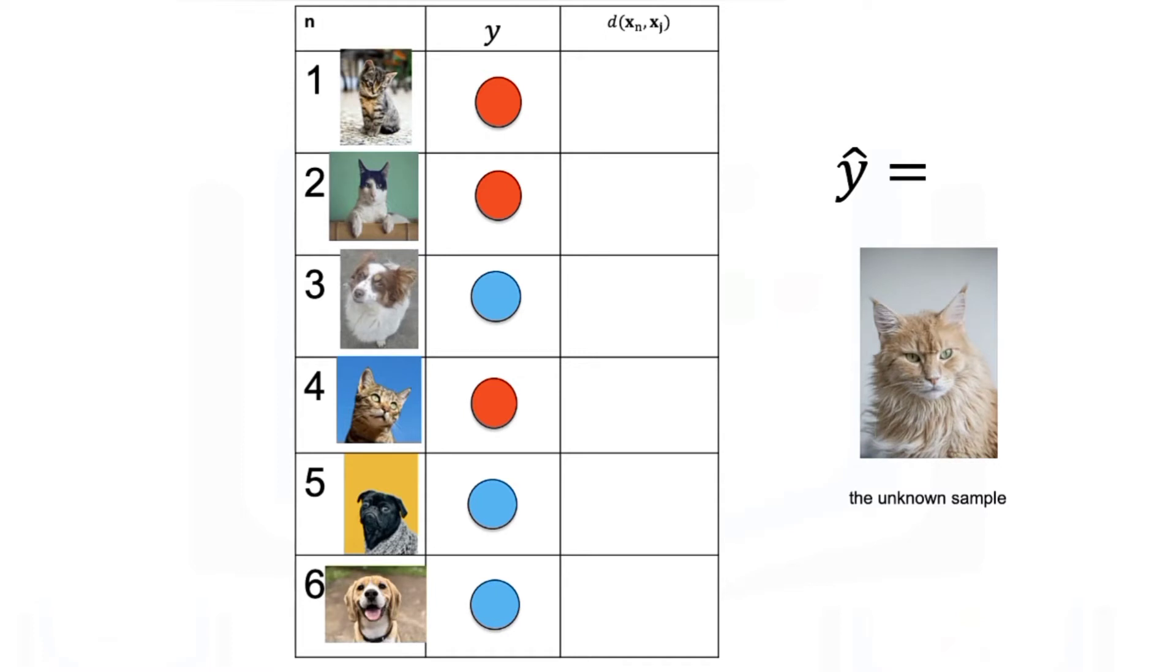The hat means it's an estimate. We calculate the distance from our unknown sample. We find the nearest point or nearest neighbor. We assign the label to the unknown sample. We sometimes call this a model. KNN is simple to code yourself, or you can use a software package like sklearn. We repeat the process for the next unknown sample.